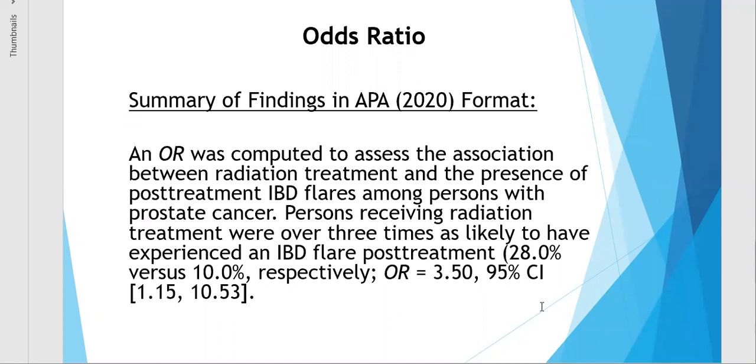So here's how you might write up your findings using APA 2020 format. An odds ratio was computed to assess the association between radiation treatment and the presence of post-treatment IBD flares among persons with prostate cancer. Persons receiving radiation treatment were over three times as likely to have experienced an IBD flare post-treatment. And then I listed the percentages in the two groups, the prevalence of the flares in each group: 28% in the radiation group versus 10% in the no radiation group, respectively. Then I listed the odds ratio and the 95% confidence interval.